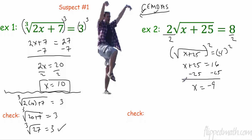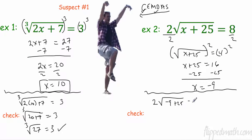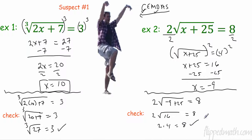But we still suspect Mr. Kelly may have some shady answers — he is kind of a shady character. So we have to check it out. Plug in negative 9: 2 times the square root of negative 9 plus 25. Negative 9 plus 25 is 16. The square root of 16 is 4. 2 times 4 definitely equals 8. So far, Mr. Kelly looks to be in the clear in terms of shady answers.